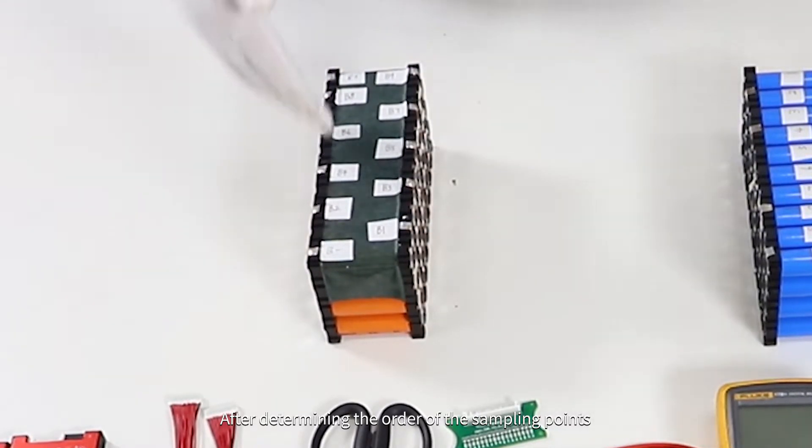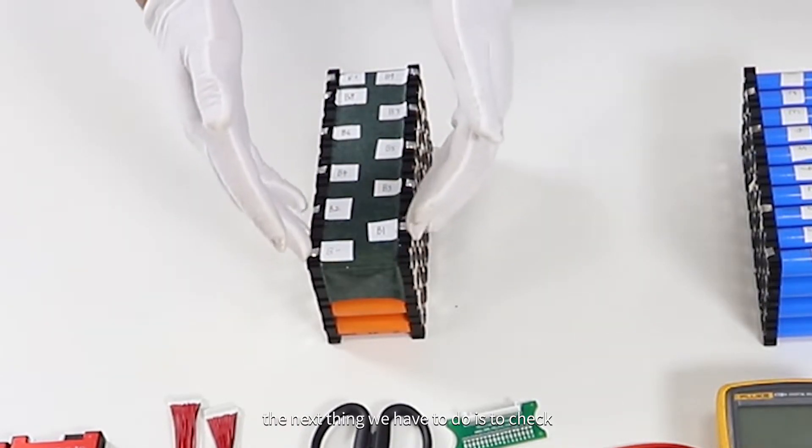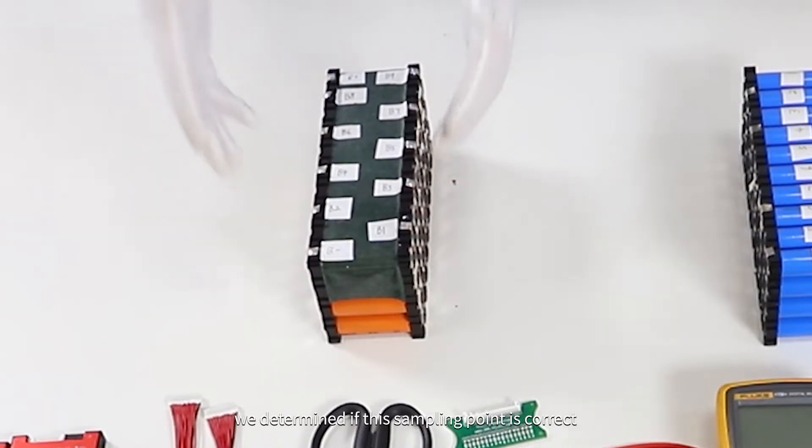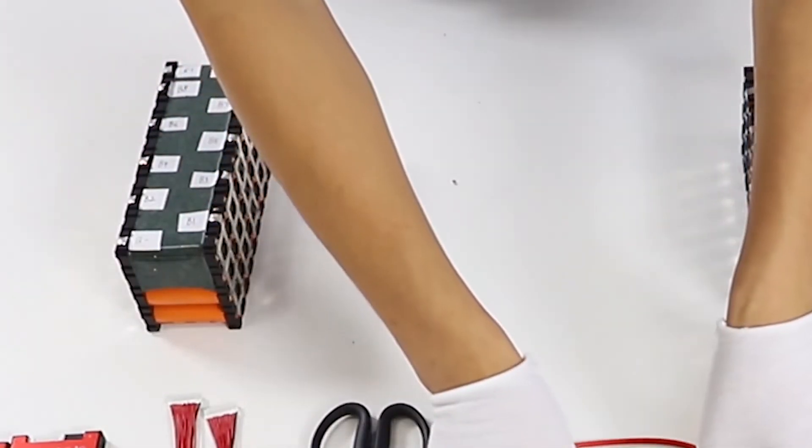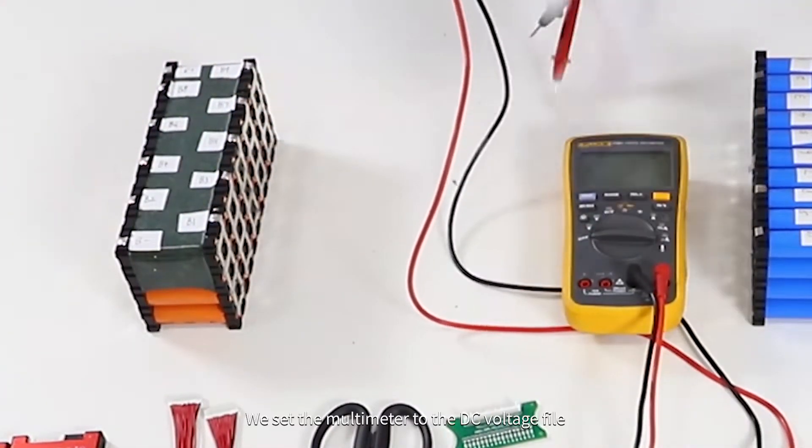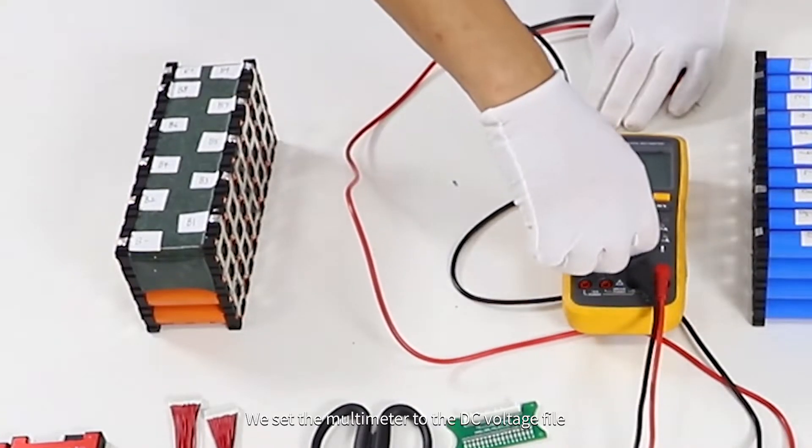After determining the order of the sampling points, the next thing we have to do is to check. We determine if this sampling point is correct. In general, we use a multimeter to detect. We set the multimeter to the DC voltage file.